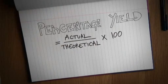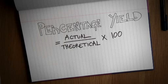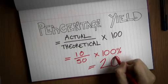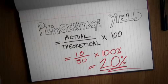This proportion is then converted into a percentage by multiplying by 100. So if I was supposed to get, say, 50 grams of a product, and I actually got 10, what would be the yield then? It would be 10 divided by 50, which is 0.2, and then times by 100%, so 20%.